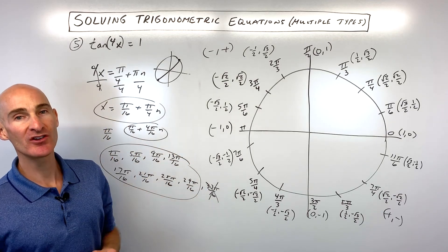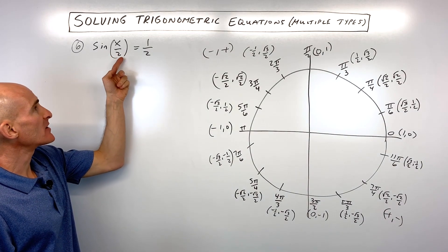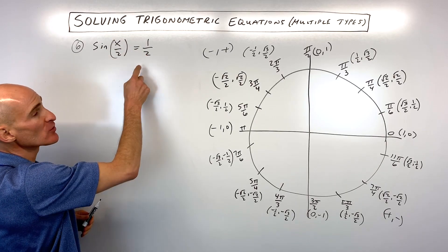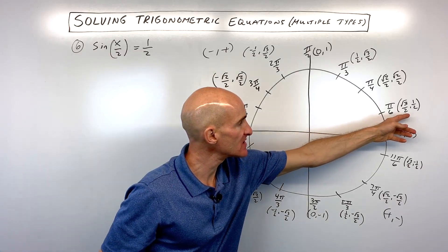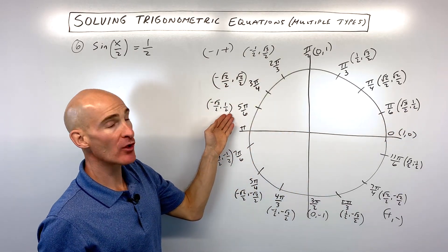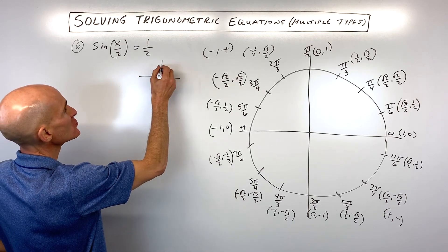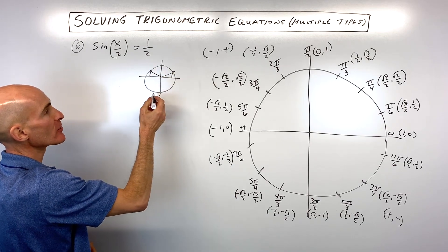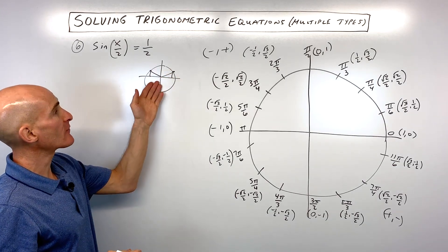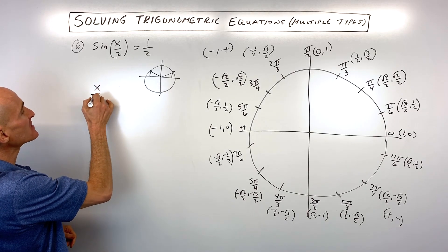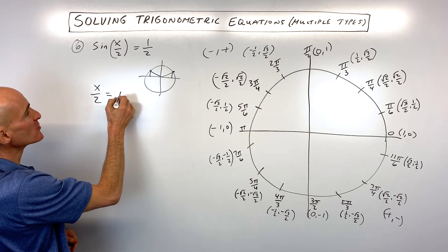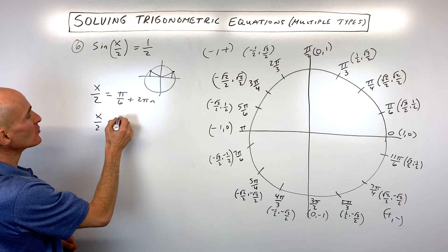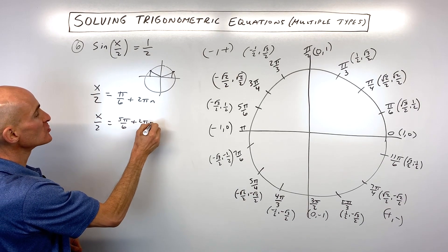Number 6: sin(x/2) = 1/2. Like the last problem, we think of x/2 as a group. Sine equals 1/2 on the unit circle at π/6 and 5π/6 — these are the y-coordinate values. Since these points aren't symmetric in a simple pattern, we write them separately: x/2 = π/6 + 2πn and x/2 = 5π/6 + 2πn.